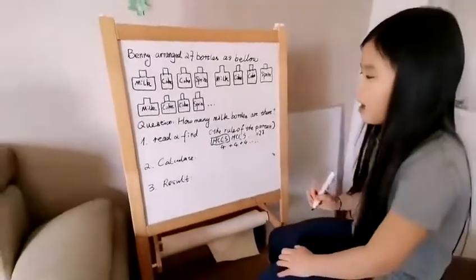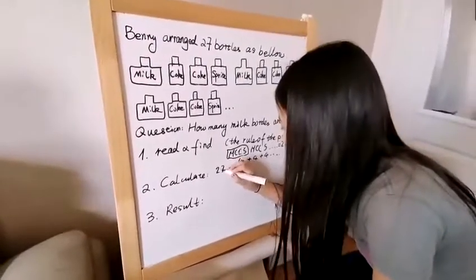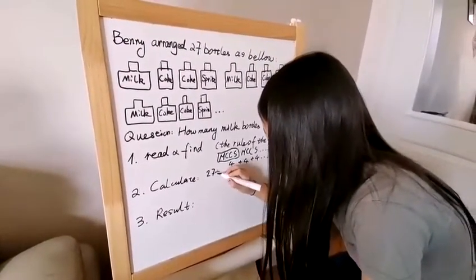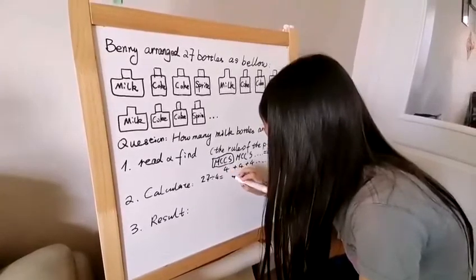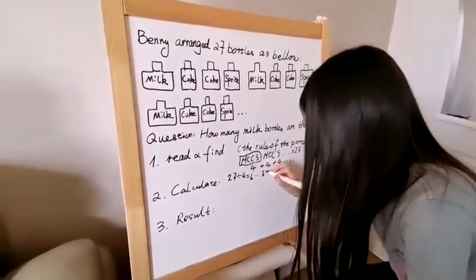Then we can calculate how many patterns we have. 27 divided by 4 equals 6, and we have 3 left.